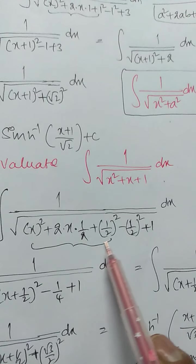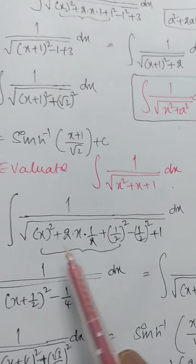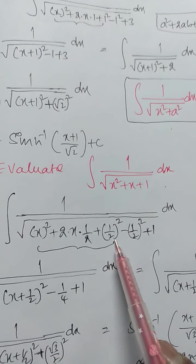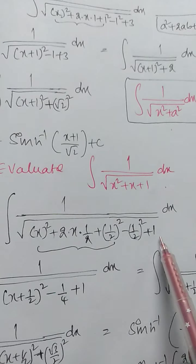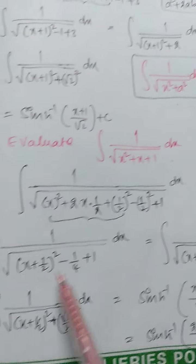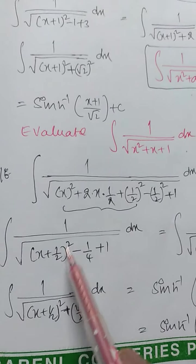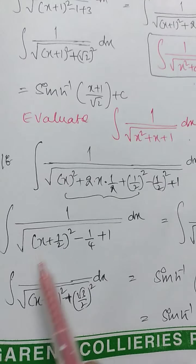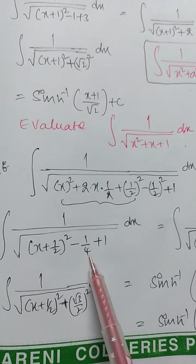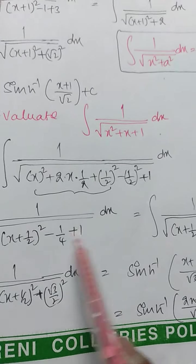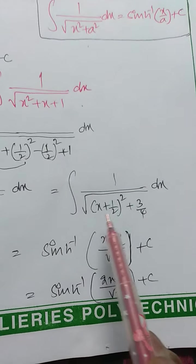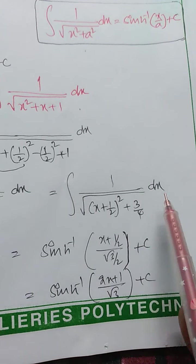So adding and separating by 1 by 2 whole square plus 1: integration of 1 by root of x squared plus 2 into x into 1 by 2 plus 1 by 2 whole square minus 1 by 2 whole square plus 1. This is in the form of a plus b whole square. Integration of 1 by root of x plus 1 by 2 whole square minus 1 by 4 plus 1 — that is 1 minus 1 by 4 equals 3 by 4.